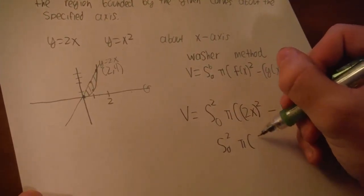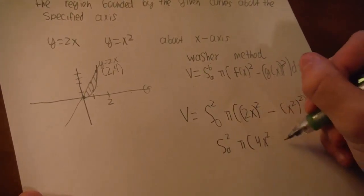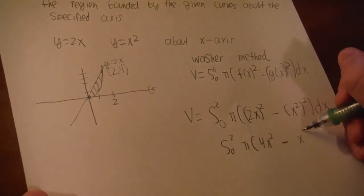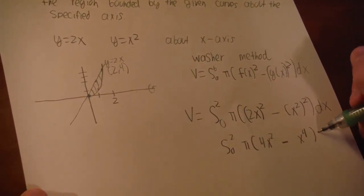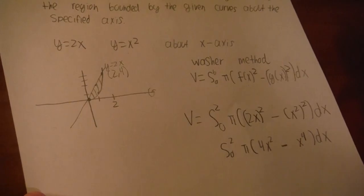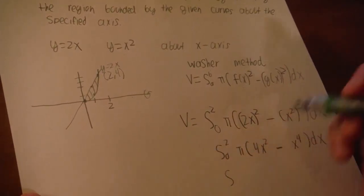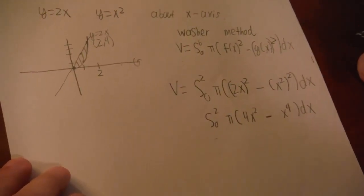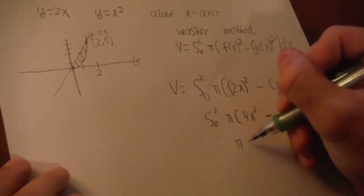First thing is first, I want to simplify the equation. So 2x squared is the integral from 0 to 2 of pi times 4x squared minus x squared squared is x to the 4th, dx.